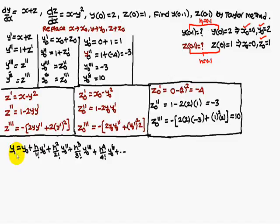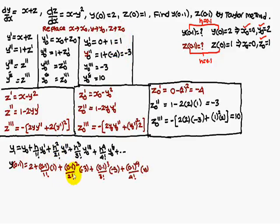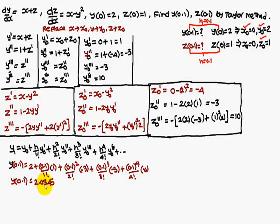Therefore, y₁ equals y naught plus h/1! · y naught dash, and so on. Substituting: y naught is 2, plus 0.1/1! into y naught dash which is 1, plus 0.1² /2! into y naught double dash which is minus 3, similarly y naught triple dash is minus 3. Simplifying, we get y(0.1) equals 2.0845.